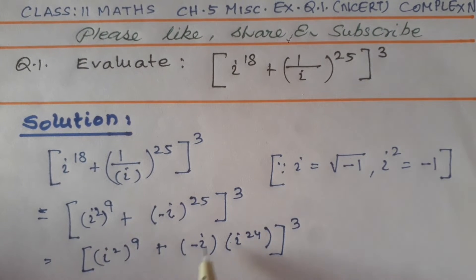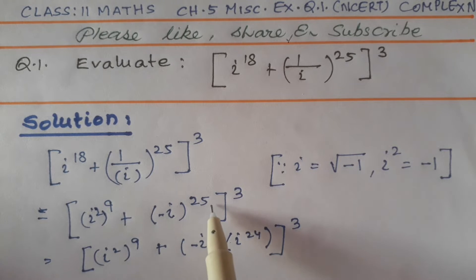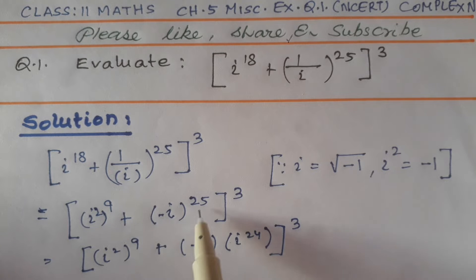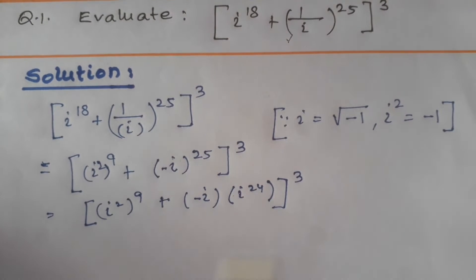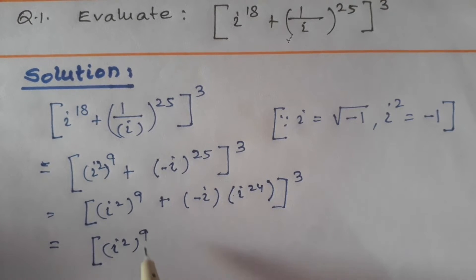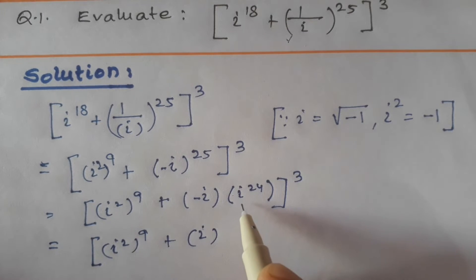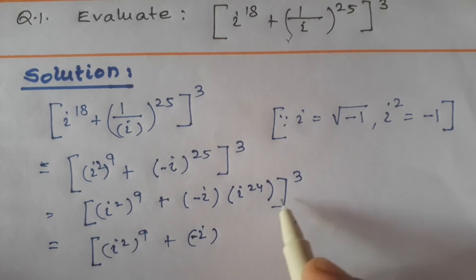Overall the expression is raised to the power cube. We have (i²)^9 plus minus iota times iota^24, all cubed. Here one power is separate and 24 power is here, so the 25 powers are accounted for. The signs work out: plus and minus, so minus 25 will be completed here.